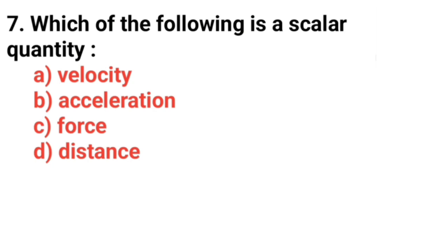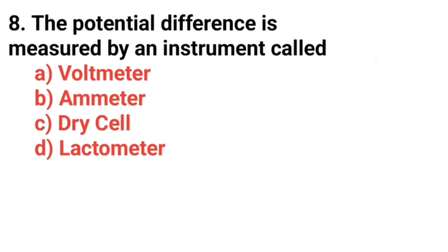Question number seven, which of the following is a scalar quantity? Answer option D, distance. Question number eight, the potential difference is measured by an instrument called? Answer option A, voltmeter.